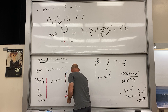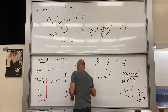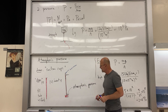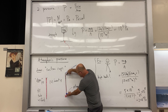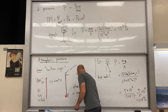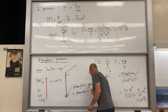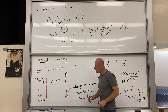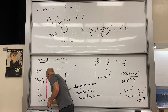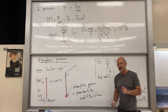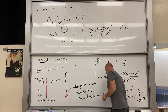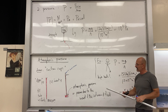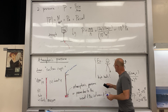Atmospheric pressure equals the pressure due to the weight of the column. The fluid used is mercury. As atmospheric pressure changes, the column height rises and falls slightly — that's what a barometer measures.